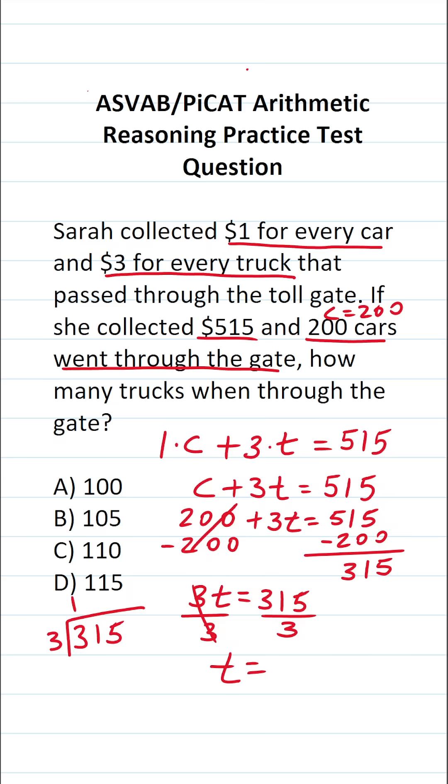I could read this as 315 divided by 3. 3 goes into 3 one time without going over. 3 times 1 is 3. 3 minus 3 is nothing, so we drop down this 1. 3 does not go into 1, so we put a 0 over the 1 and drop down this 5. 3 times 5 is exactly 15 with no remainder. So we can see that 315 divided by 3 is going to be 105. In other words, 105 trucks pass through the toll gate.